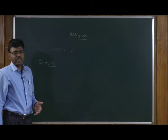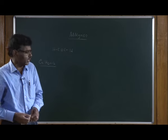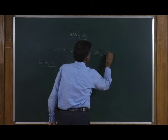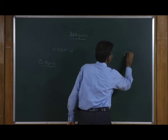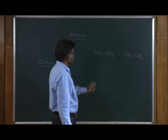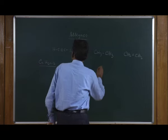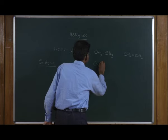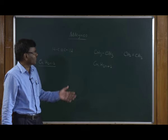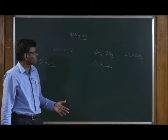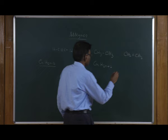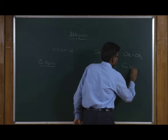In the previous classes we have seen alkanes and alkenes. Alkanes are saturated hydrocarbons and have the general formula CnH2n+2. Alkenes are unsaturated hydrocarbons with at least one carbon-carbon double bond and have the general formula CnH2n.